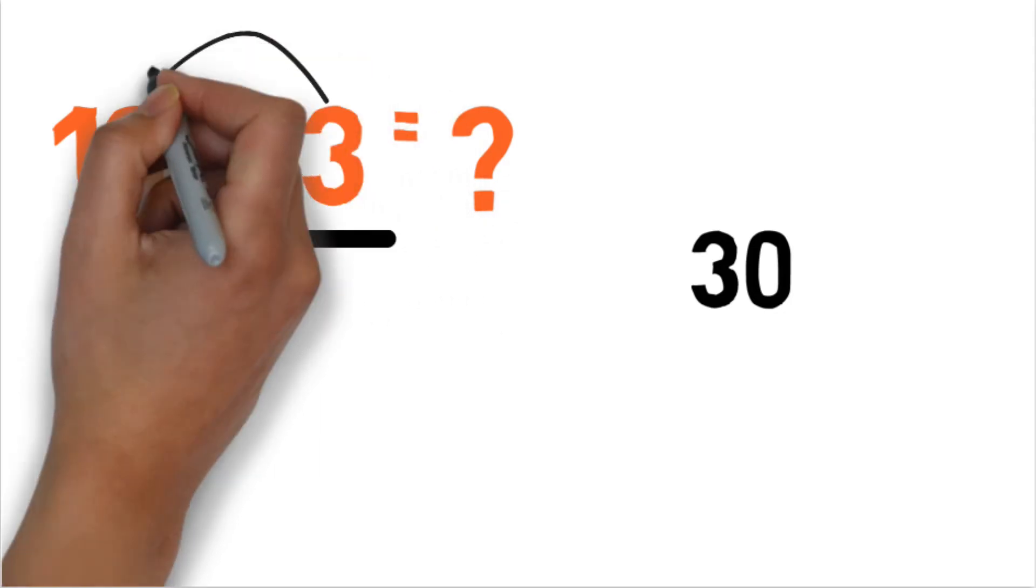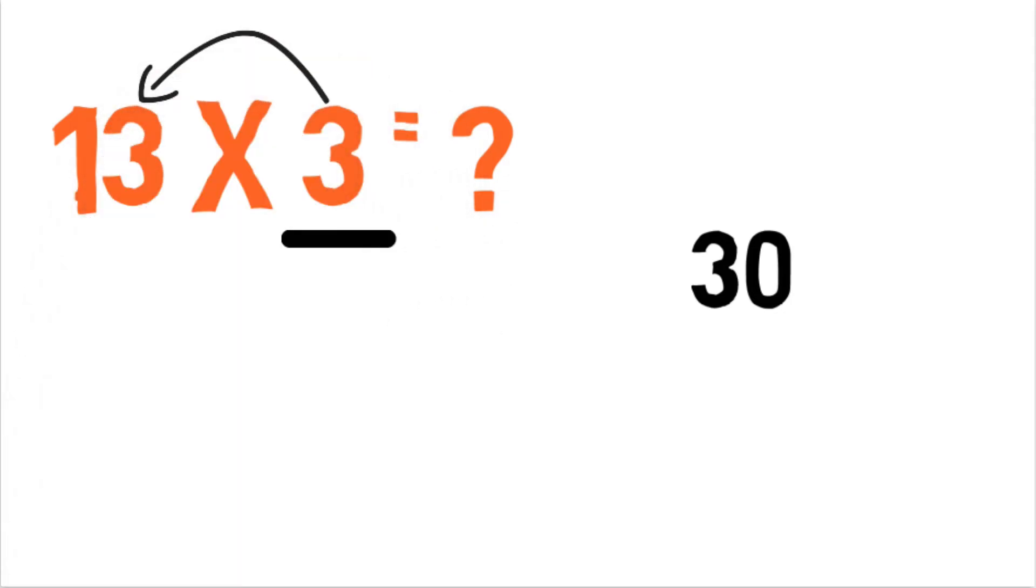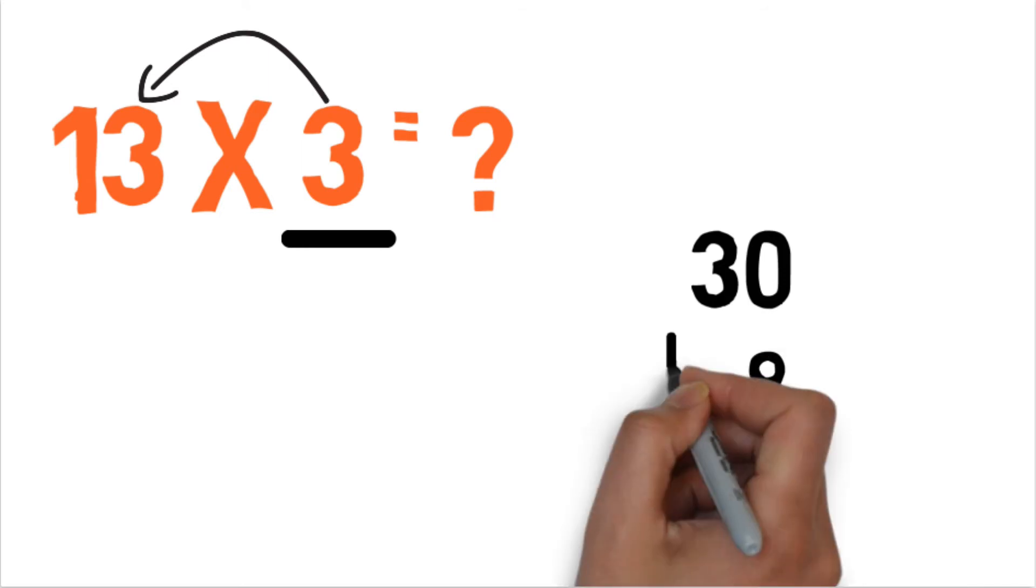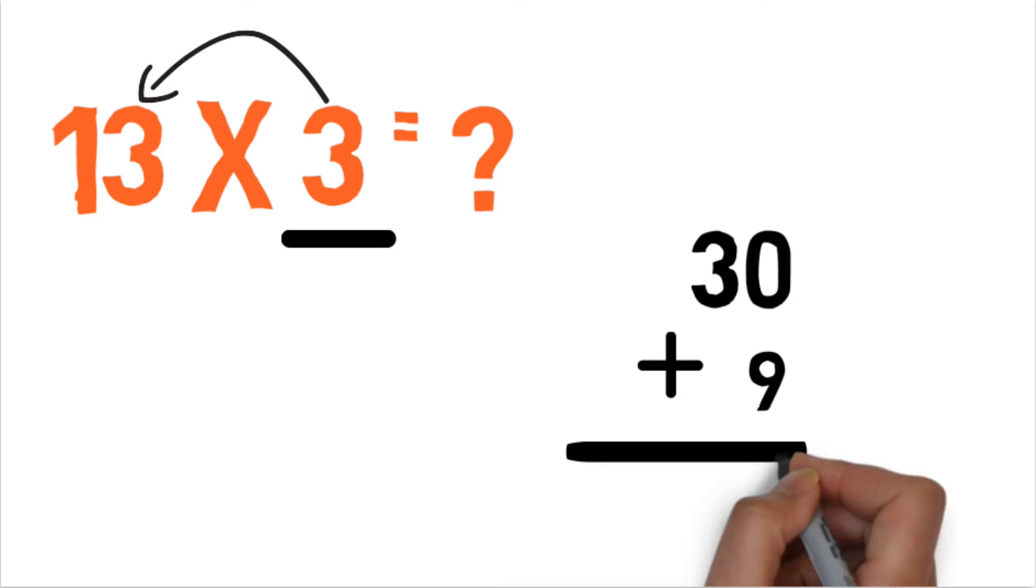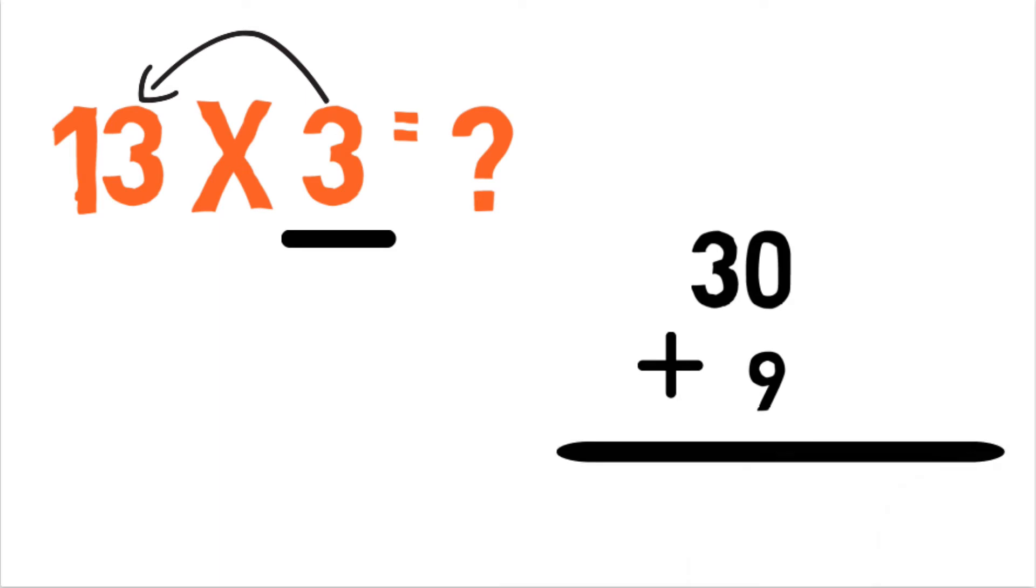Now multiply unit digits: 3×3 is 9. So if I add both of them, it will become 39. So answer of 13×3 is 39. It's very simple friends, believe me.